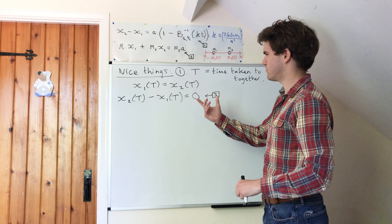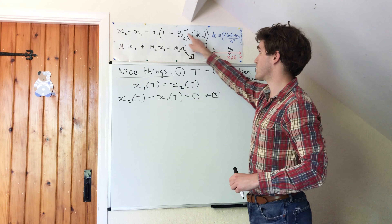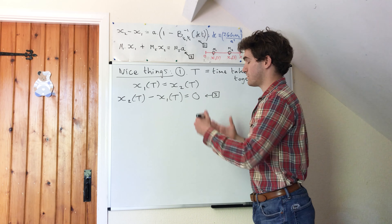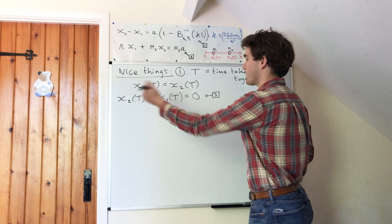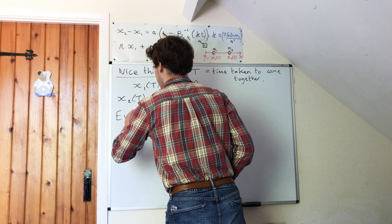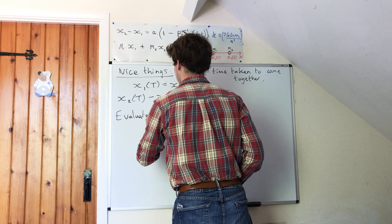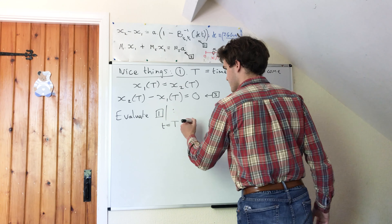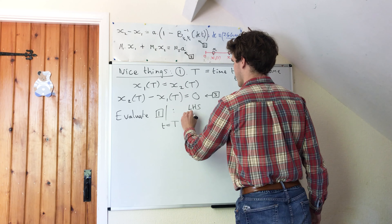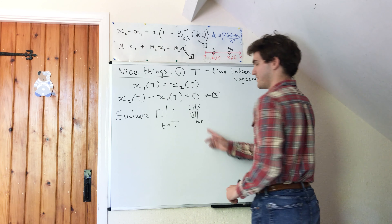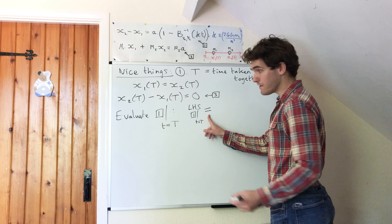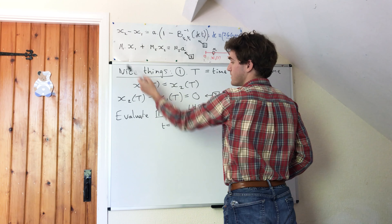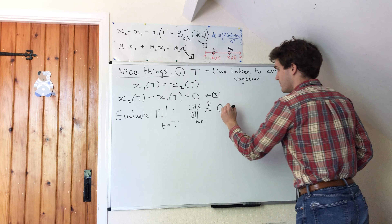Now this looks awfully similar to equation one. This is equation one up here, this is equation two. So because we get a zero here, which makes things awfully nice and simple, I'm going to evaluate equation one at t equal to big T. When I do this, the left-hand side of equation one, when t is equal to big T, will be equal to x2 of big T minus x1 of big T — by equation three, this is zero, so we get this being equal to zero.